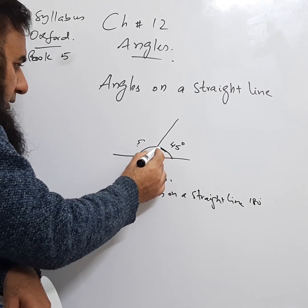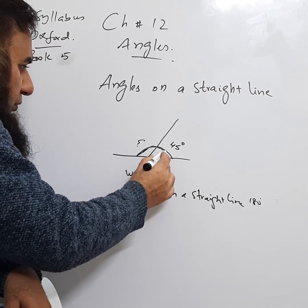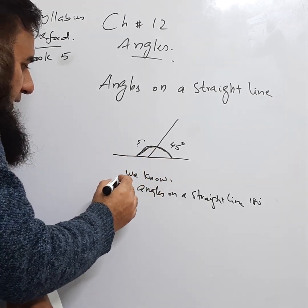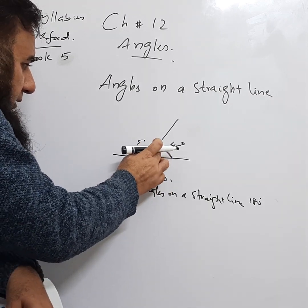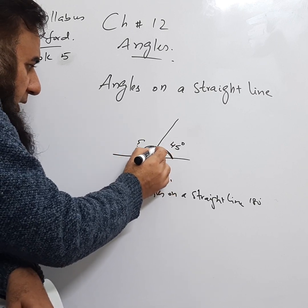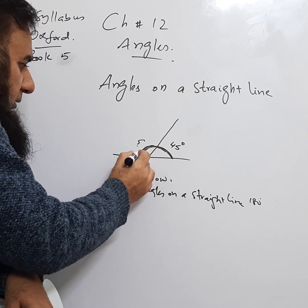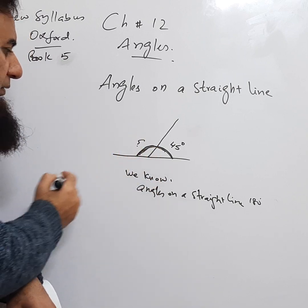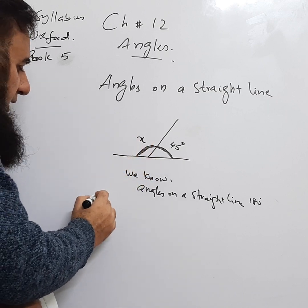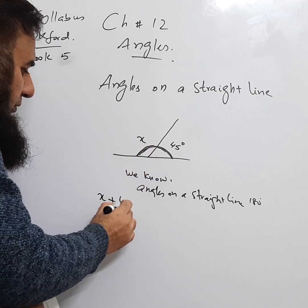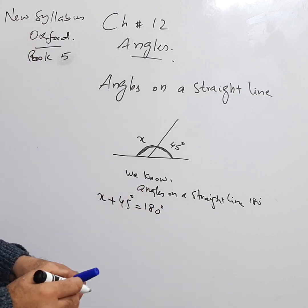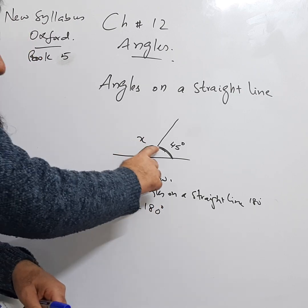So this semicircle is equal to 180 degrees. This whole semicircle is 180, so this plus this equals 180. If this part is 45 degrees, to find out this part we will suppose this part is X.